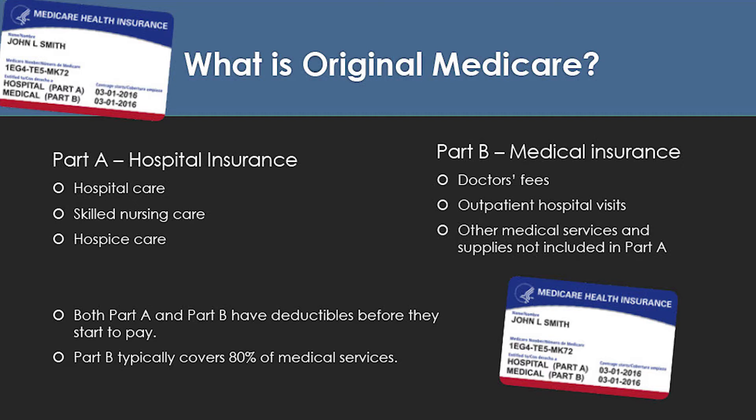When you look at your Medicare card, you're going to see that you have two different levels of coverage: Part A, which is your hospital coverage, and Part B, which is your medical coverage. Under Part A hospitalization insurance, you get things like hospital care, skilled nursing care, and hospice care. On Part B, you've got doctor's fees covered — that's all your medical benefits — outpatient hospital visits, and other medical services and supplies not included in Part A.